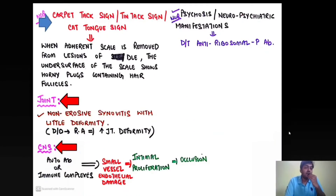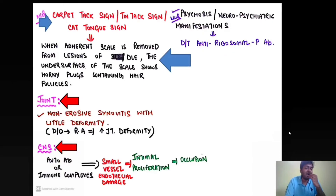An important MCQ is the carpet tack sign, also called the tin tack sign or cat tongue sign. This is seen in DLE — discoid lupus erythematosus — which is a variant of SLE where skin involvement is predominant. When the adherent scale is removed from the lesions of DLE, the under surface of the scale shows plugs containing hair follicles — this is the classical carpet tack sign. In SLE, joint involvement is classically non-erosive synovitis with little deformity, in contrast to rheumatoid arthritis.